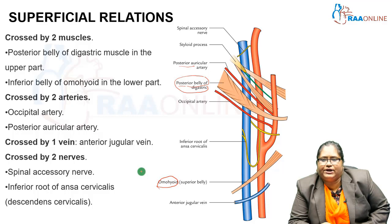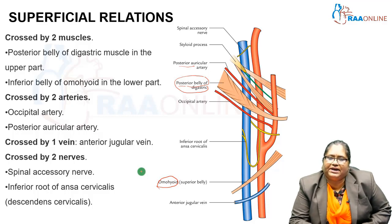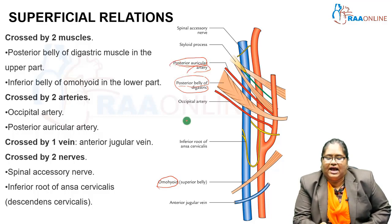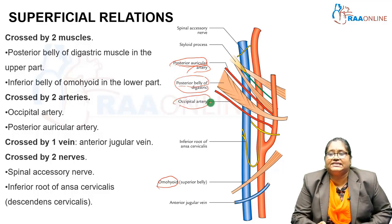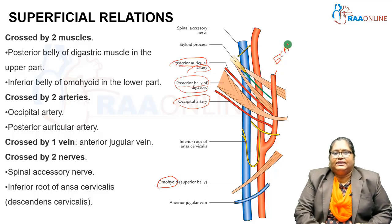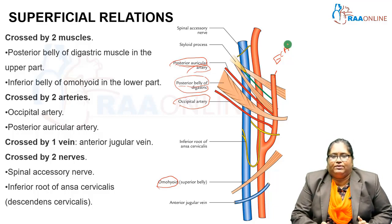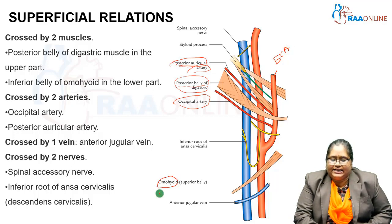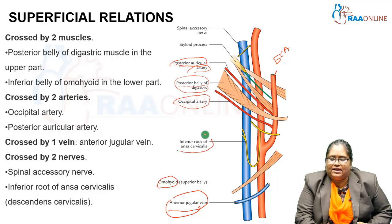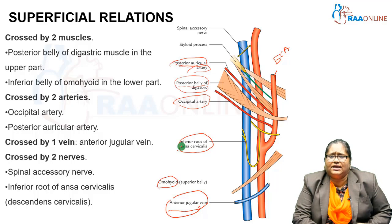The internal jugular vein is also crossed by two arteries: the occipital artery and the posterior auricular artery, both branches of the external carotid artery. Additionally, it is crossed by one vein — the anterior jugular vein — and by two nerves: the spinal accessory nerve and the inferior root of the ansa cervicalis (descendens cervicalis).